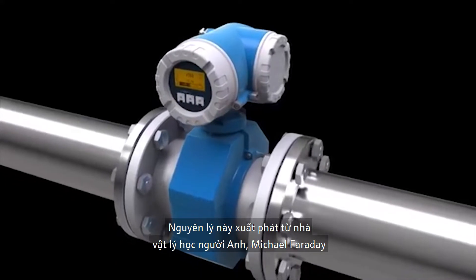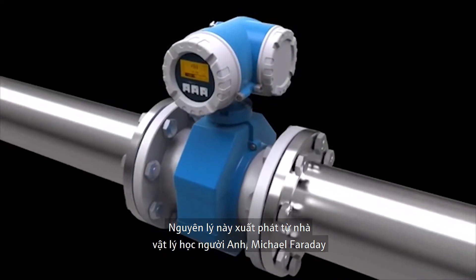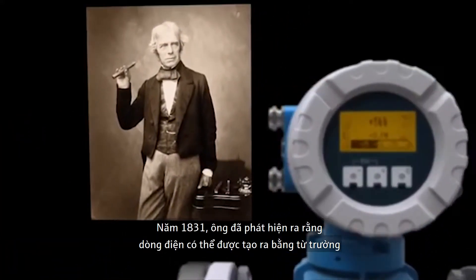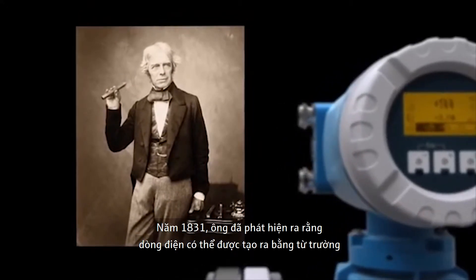The basic physics of this principle can be traced back to the English physicist Michael Faraday, who in 1831 discovered that electrical current can be generated with a magnetic field.